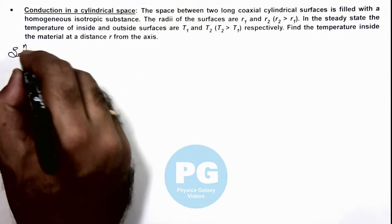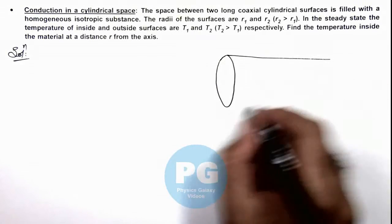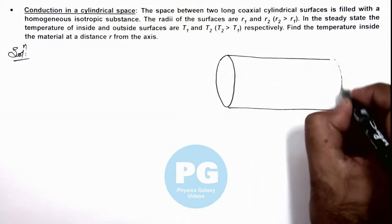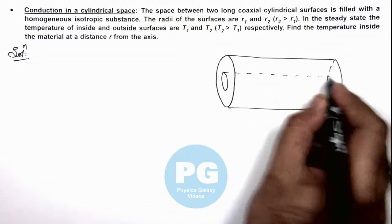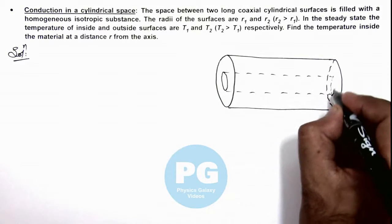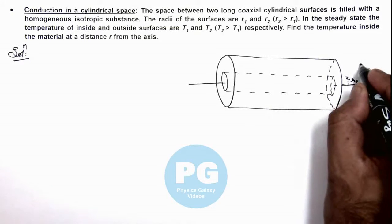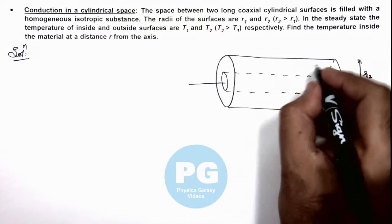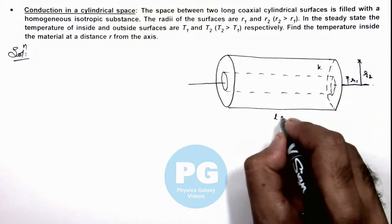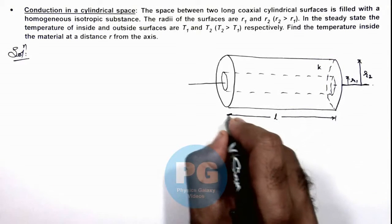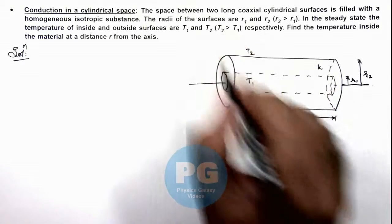For the sake of clarity, we can draw a picture. This is a cylindrical substance of which the outer radius is r2 and the inner cylindrical zone is of radius r1. If this is the axis of the cylinder, the inner radius is r1 and the outer radius is r2. The material inside is assumed to be of thermal conductivity k. The length of this cylindrical region is given as l. The inside temperature is t1 and outside is t2, with outside temperature at a higher value.